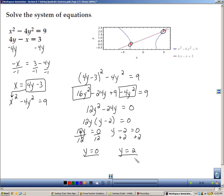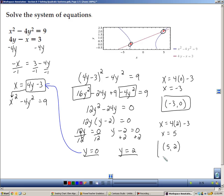Now to find the solution for a system, we need ordered pairs. So I have to take the 0 and the 2 and I have to plug them back in somewhere to find out what the x value is. The easiest place to do that is in this equation, x equals 4y minus 3. So I know that this line and this hyperbola intersect in two places at the ordered pair (-3, 0) and at (5, 2).